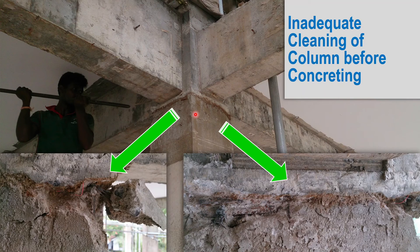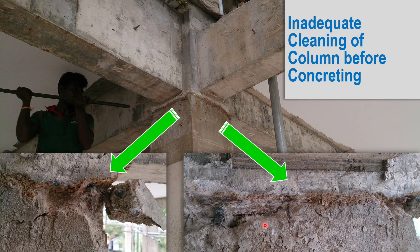Inadequate cleaning before concreting is another concern. When doing slab reinforcement, foreign materials collect on the floor. When cleaned using compressed air or other means, these materials collect at the column heads or beam-column joints. If not removed, a layer of sludge will form there, separating the lower and upper parts of the column. This is a very critical situation and could lead to failure if the sludge layer extends toward the center of the column.